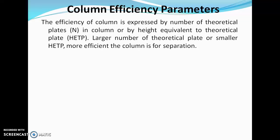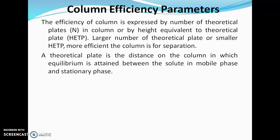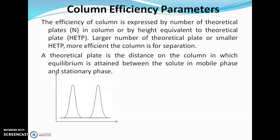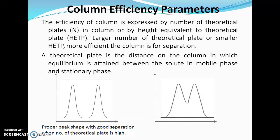Next, we will see column efficiency parameters. The efficiency of a column is expressed by the number of theoretical plates or by HETP. A large number of theoretical plates or smaller HETP gives good separation. A theoretical plate is the distance on the column in which equilibrium is attained between solute in mobile phase and stationary phase. If the number of theoretical plates is more, we get a good Gaussian curve shape peak and good separation of two solutes.